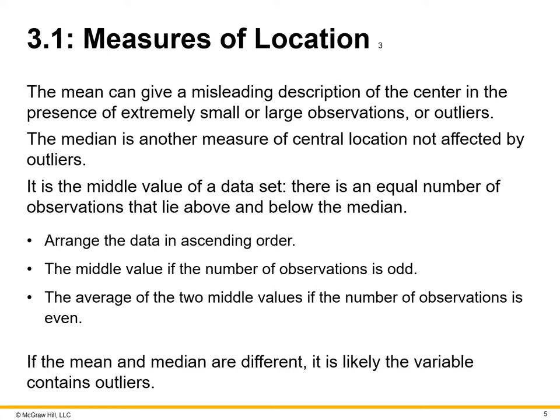The median is another measure of central location not affected by outliers. Outliers are variations of data points or variables that do not necessarily fit into the schema of a mean, median, or mode. A median is the middle value of a data set — there's an equal number of observations that lie above and below it. You must arrange the data in ascending order; the middle value if the number of observations is odd is your median, and the average of the two middle values if the number is even. If the mean and median are different, it is likely the variable contains outliers.